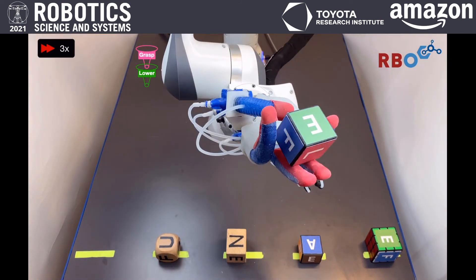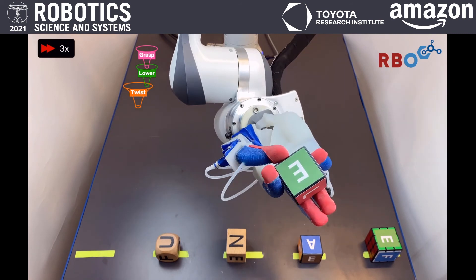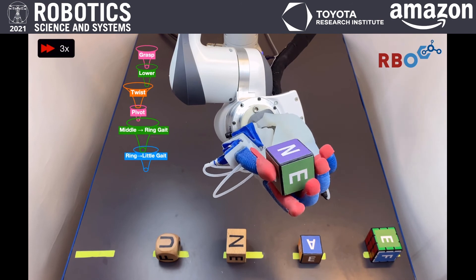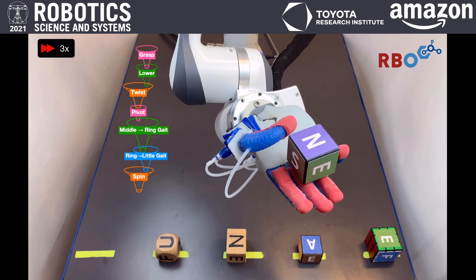Using a simple planner, we generate a sequence of funnels and execute them. Because we are confident about the outcome of each funnel, we do not need to use any cameras or sensors to track the state of things.